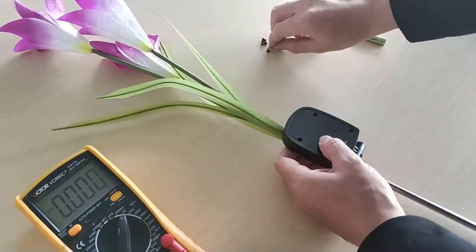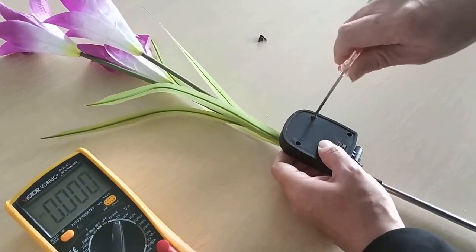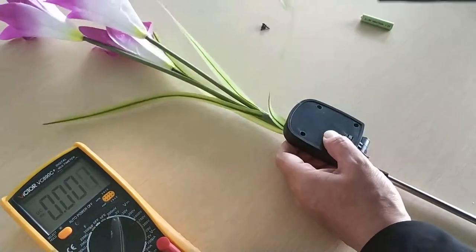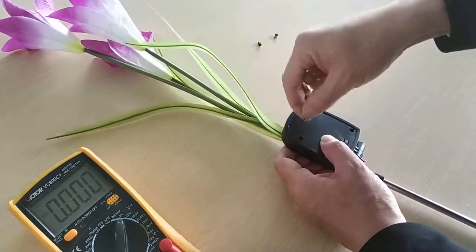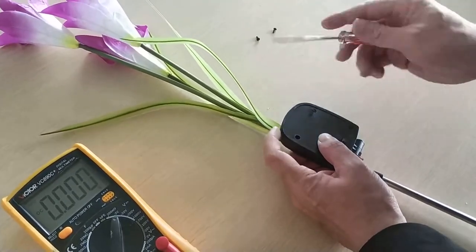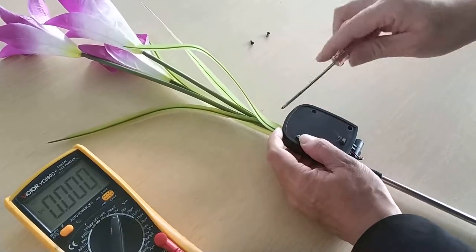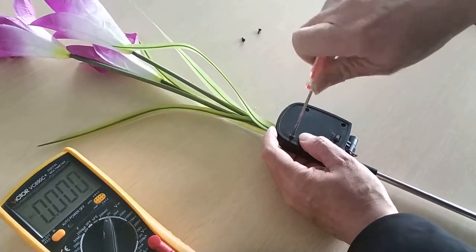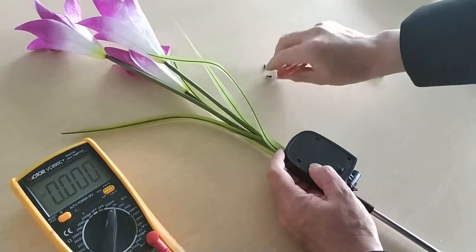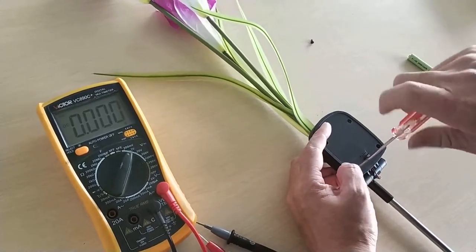Then we can put it outdoors to charge it for one or two sunny days. It will be working. Make sure when you put it outside for charging, there's no building shadow or tree shadow on the solar panel. The solar panel should directly face the sun.